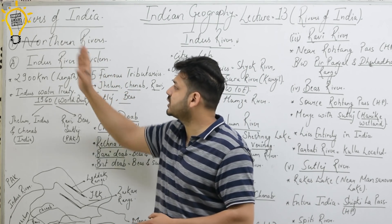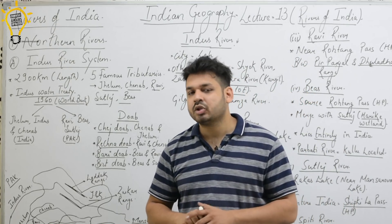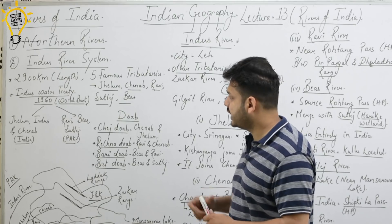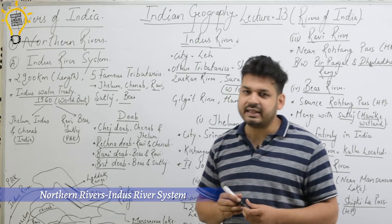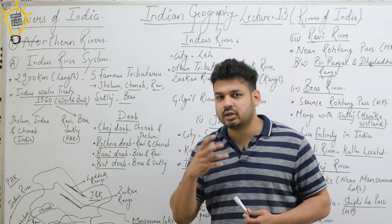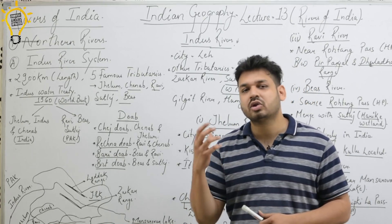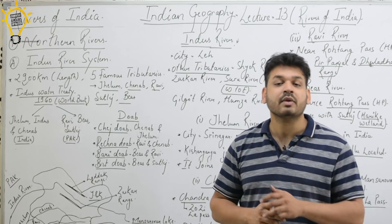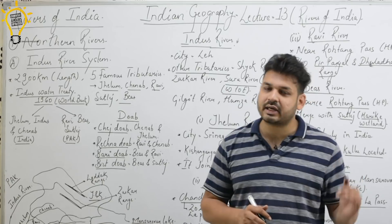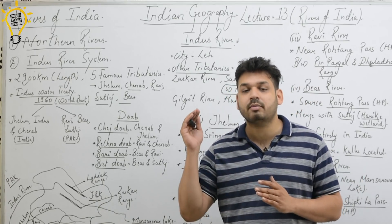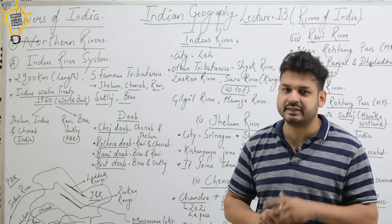Let's start with the first topic: the river systems of India, beginning with the Indus River System. The Indus River is 2900 km long. It originates in Tibet, then flows through India, then Pakistan, and finally falls into the Arabian Sea.